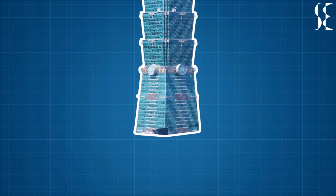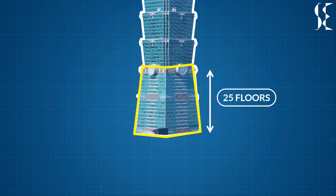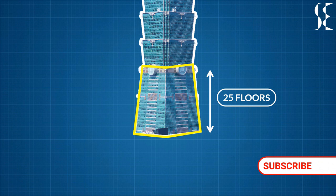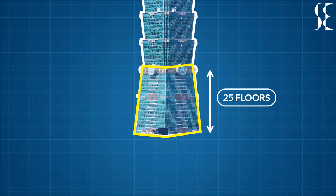Below the 8 repetitive modules, a 25-storey base shaped as truncated pyramid is present. This base provides an improved overturning resistance and lateral stiffness compared to a straight block.